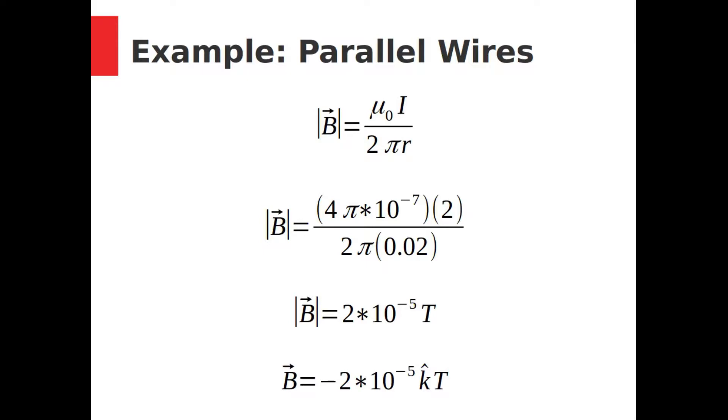We'll start by calculating the magnetic field created by the left wire at a distance of 0.02 meters. Ampere's law tells us the magnetic field created by current carrying wires, so that's what we need to use. When we substitute all the known values in, we get a strength of the magnetic field as 2 times 10 to the negative 5 Tesla. That is the strength of the field at a distance of 0.02 meters from the left wire.